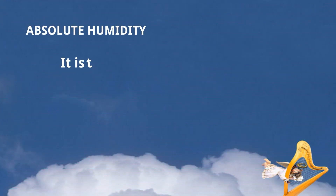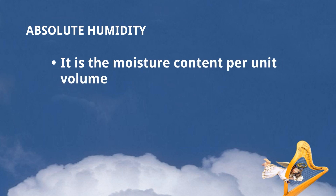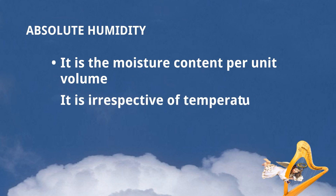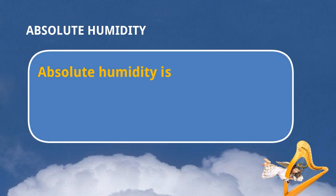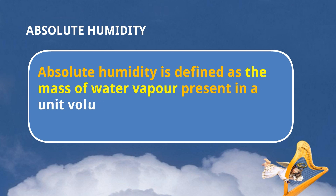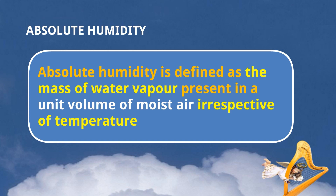Absolute humidity is the moisture content per unit volume and it is irrespective of temperature — meaning when we define it, we don't specify temperature. Absolute humidity is defined as the mass of water vapor present in a unit volume of moist air, irrespective of temperature.